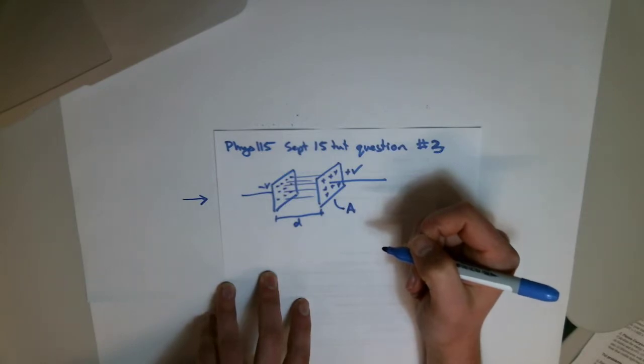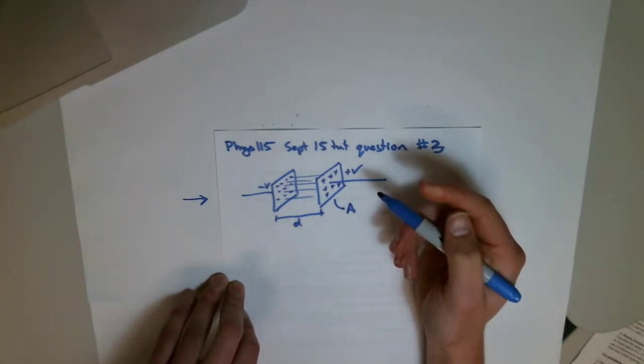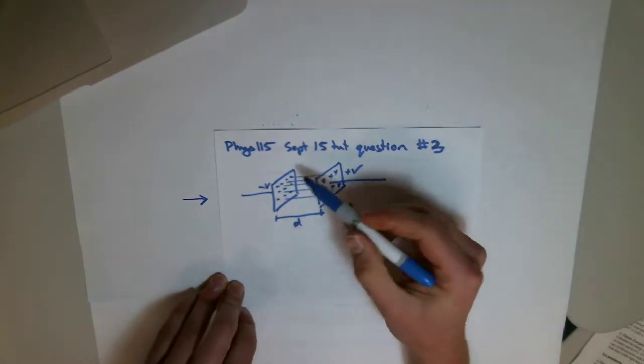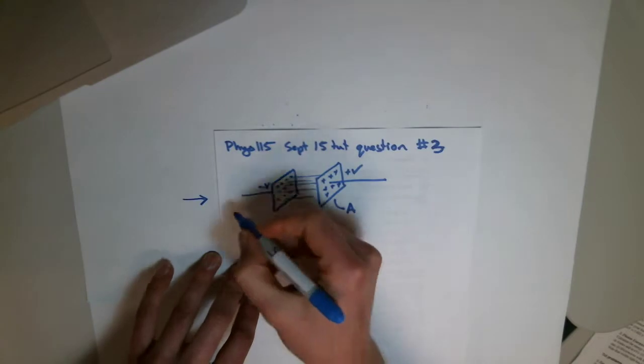That's part 1, already done. We've been asked to sketch and label a diagram showing the charge, the electric field, and the uniform electric field between them, ignoring fringe effects. So for part 2,